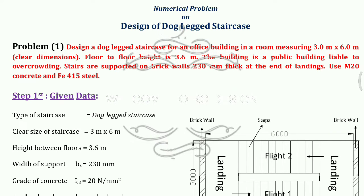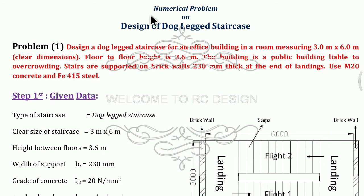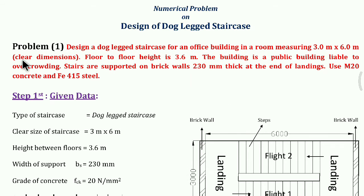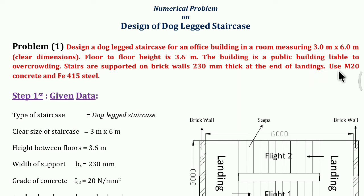Welcome. In this video we are discussing a numerical problem on design of a dog-legged staircase. Problem: Design a dog-legged staircase for an office building in a room measuring 3 meter by 6 meter clear dimensions. Floor to floor height is 3.6 meter. The building is a public building liable to overcrowding. Stairs are supported on brick walls 230 mm thick at the end of landings. Use M20 concrete and Fe415 steel.